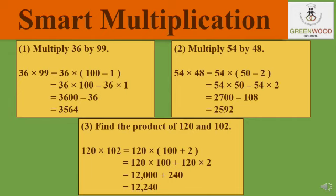Another way of smart multiplication. Find the product of 36 and 99. We split 99 as 100 minus 1, written in brackets. So 36 will first be multiplied with 100, then minus sign, and after that 36 will be multiplied with 1. 36 into 100 is 3600. Minus 36 into 1 is 36. Subtract the two numbers and you get your answer as 3564.